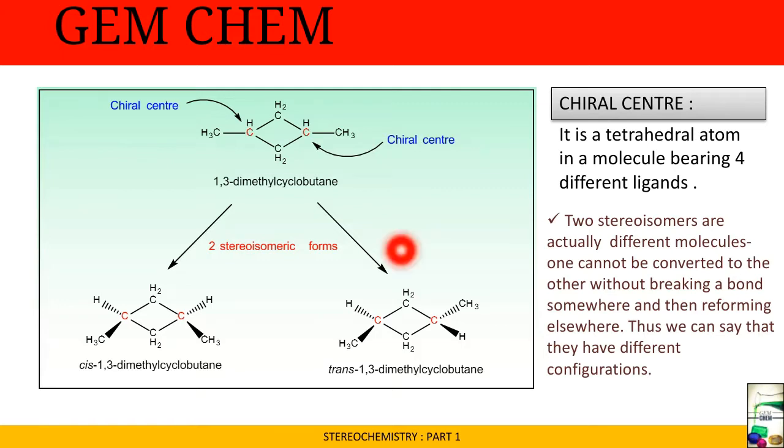Suppose we consider 1,3-dimethylcyclobutane. If you don't have any idea about nomenclature, you can see the IUPAC nomenclature series linked in the description box. Here we can see two chiral centers. A chiral center is a tetrahedral atom in a molecule bearing four different ligands. So it has four different kinds of groups attached to it.